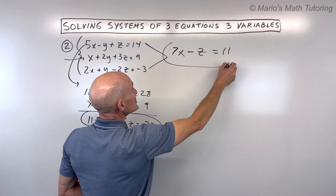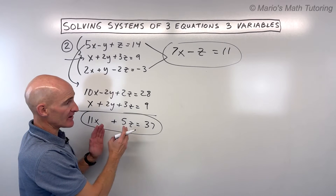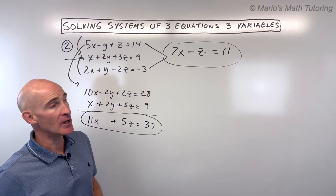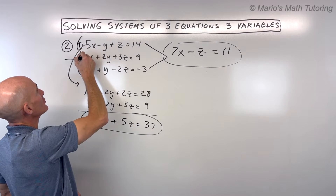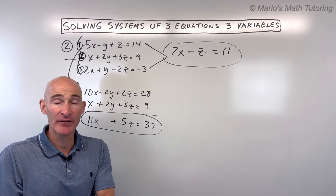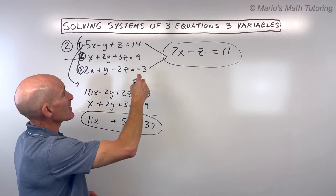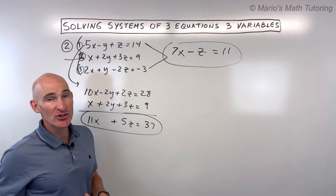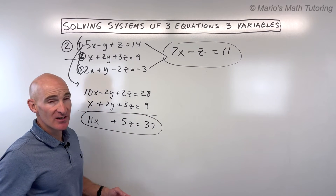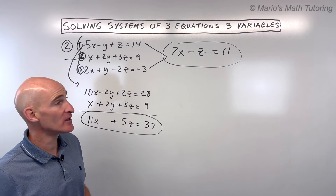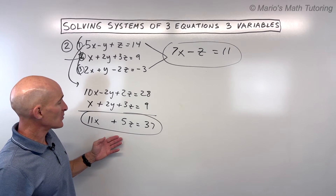The biggest thing that happens with students on these problems is little arithmetic mistakes. If you need to use a calculator or do some work off to the side, whatever it takes to be very accurate. Another tip is to label the equations — call them equation 1, 2, and 3 — so you can keep track of which you're combining and which you still need to use. Once you get down to the two-variable, two-equation system, you're on easy street — you're used to this from earlier in math using substitution, elimination, or graphing. Let's stick with the elimination method.